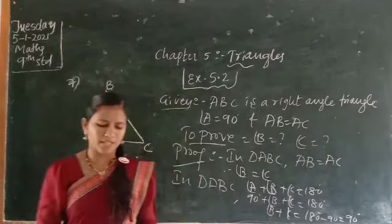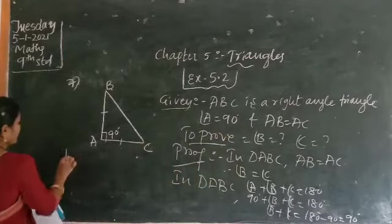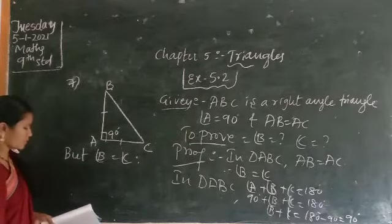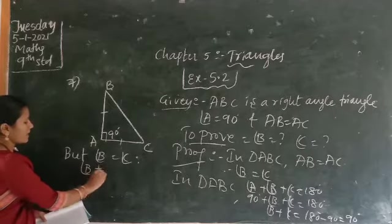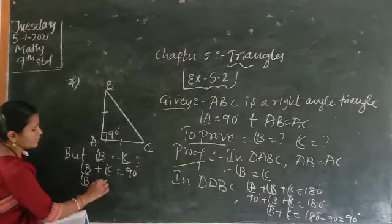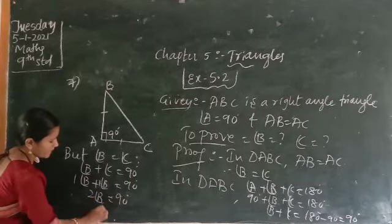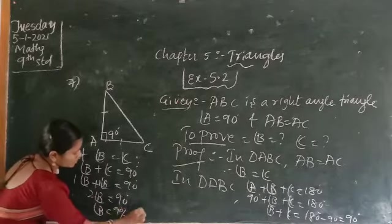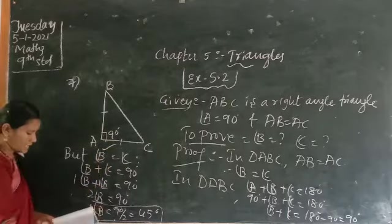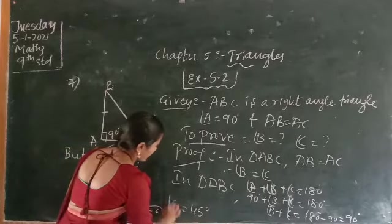That gives 90 degrees. Since angle B is equal to angle C, we can write 2 times angle B equals 90 degrees. So angle B equals 90 divided by 2, which gives 45 degrees. Therefore angle B is 45 degrees. What about angle C? Angle C is also 45 degrees.